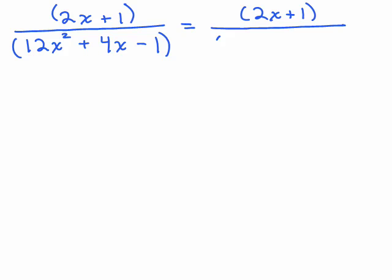I'm going to see if 2x plus 1 is the correct factor. Well, if it was the correct factor, 2x times what will give you 12x squared? 6x, and 1 times what will give you a negative 1. And then just do a double check, and when you do the FOIL method, indeed, it actually does equal 12x squared plus 4x minus 1.